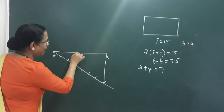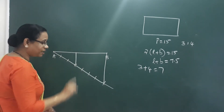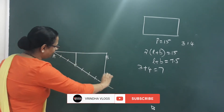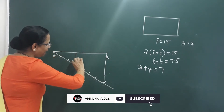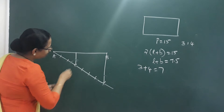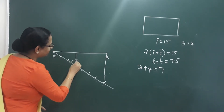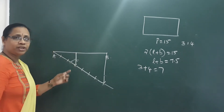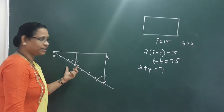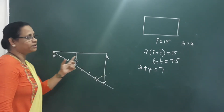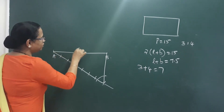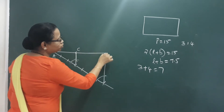This is a parallel line — corresponding angles are equal. That's the same concept here. We put a set square in this section. This portion is 3 parts, and the ratio of this portion is 3 is to 4.